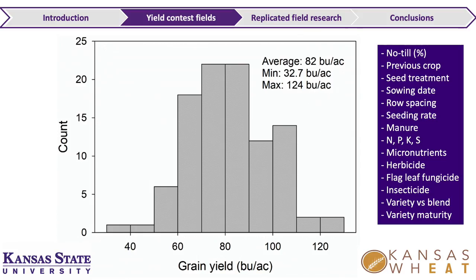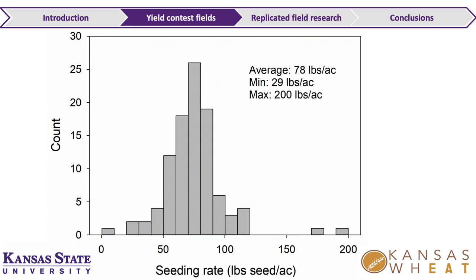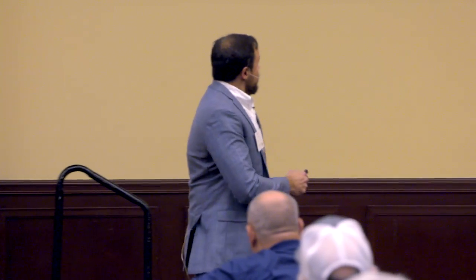Each of these fields reported several different management practices: seeding rate, tillage, fungicide, insecticide, herbicide, and so on. Looking at seeding rate in pounds of seed per acre, the average was 78 pounds per acre, ranging from as low as 29 pounds up to about 200 pounds per acre. Those two fields planted at 200 pounds were planted very late — after a soybean crop — but still yielded well. When planting late, those very high seeding rates are actually appropriate.